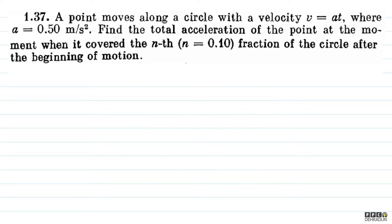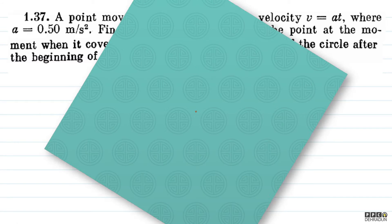The question says: a point moves along a circle with a velocity v equal to at, where a = 0.50 meter per second square. Find the total acceleration of the point at the moment when it covered the nth fraction, where n = 0.10, of the circle after the beginning of the motion.